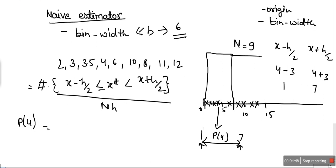Here, the number of data points in this bin is 5, so it's 5 upon 9 multiplied by 6. N is the total number of data points and h is bin width. This will be the probability for naive estimator.